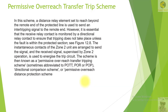In this scheme, a distance relay element set to reach beyond the remote end of the protected line is used to send an inter-tripping signal to the remote end. However, it is essential that the received relay contact is monitored by a directional relay contact to ensure tripping does not take place unless the fault is within the protected zone. The instantaneous contacts of the zone 2 unit are arranged to send the signal, and the received signal supervised by zone 2 operation is used to energize the trip circuit. The scheme is known as the permissive overreach transfer tripping scheme, sometimes abbreviated as POTT, POR, or POP direction comparison scheme.